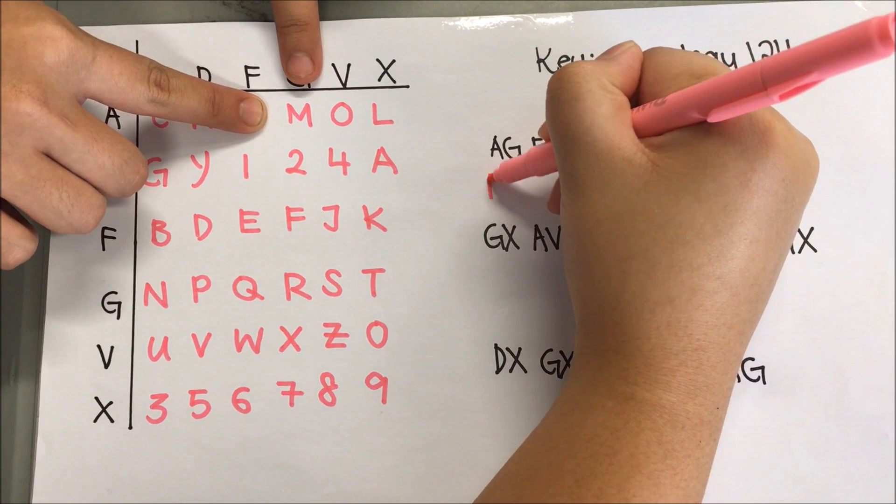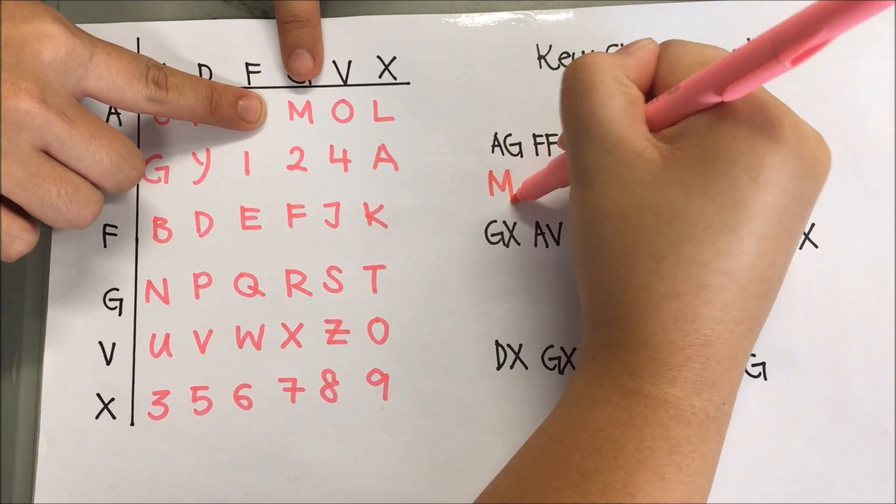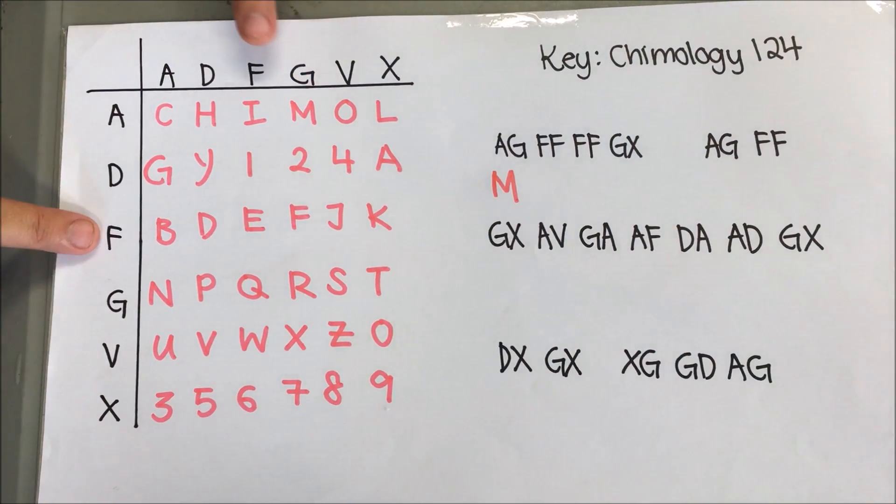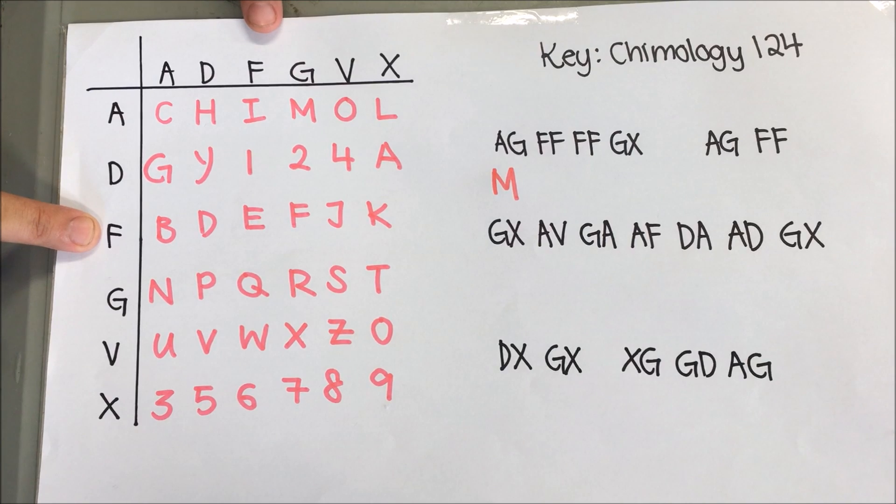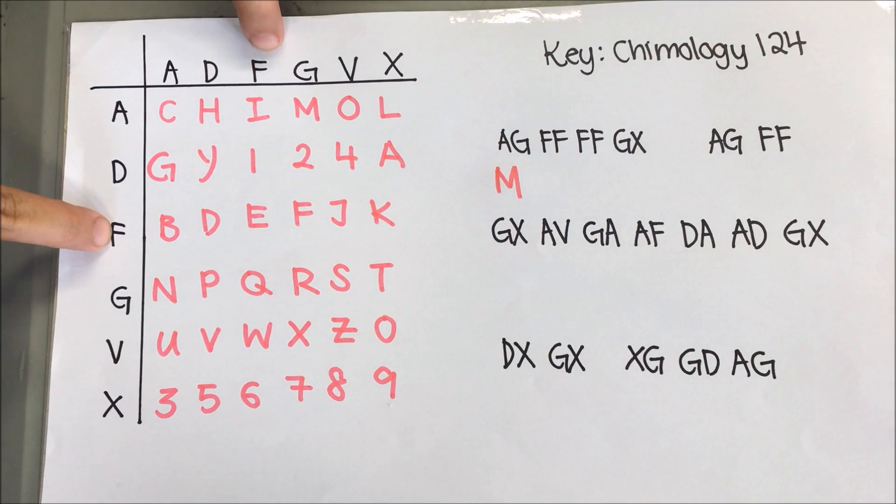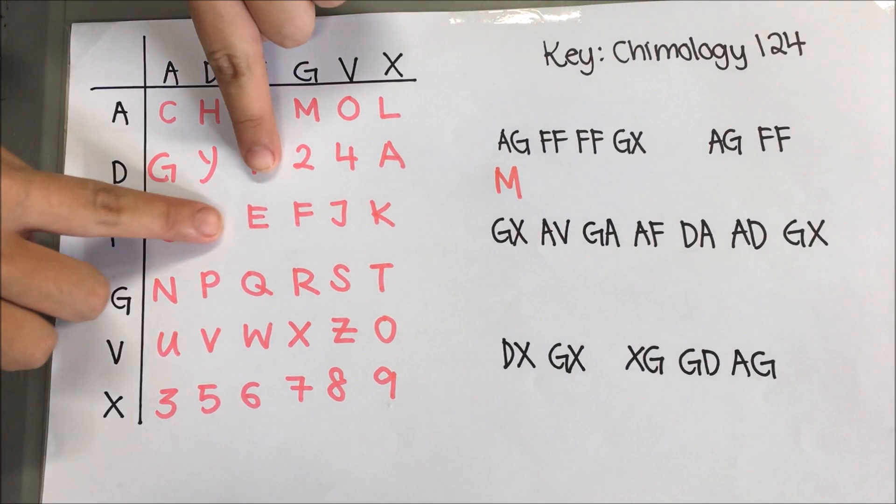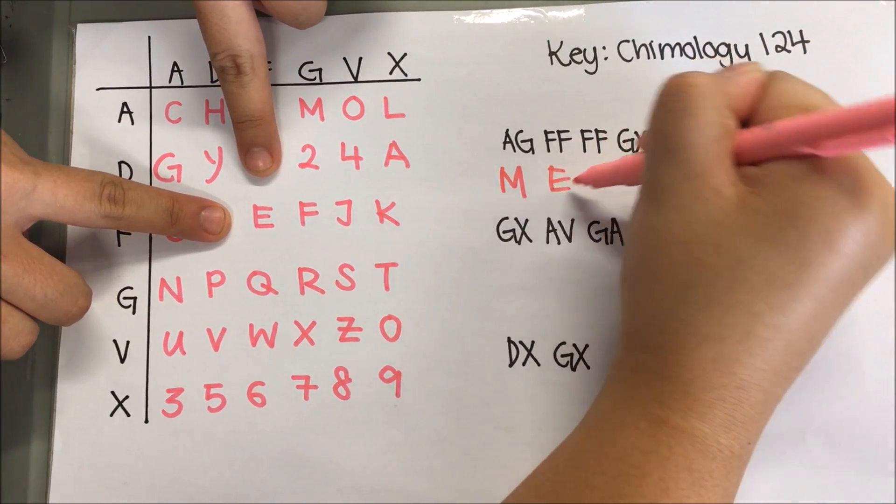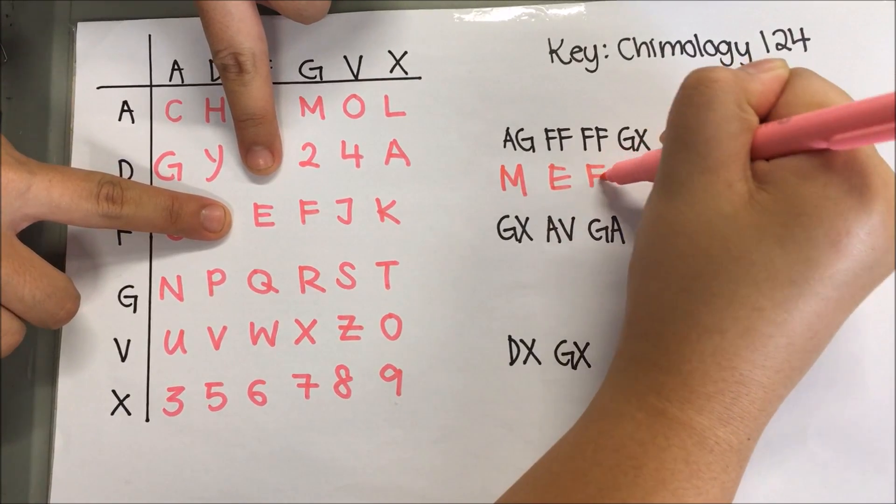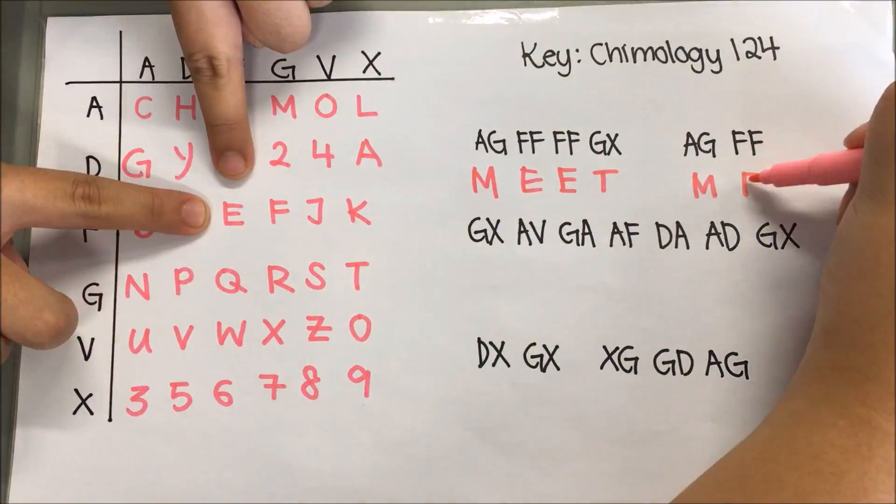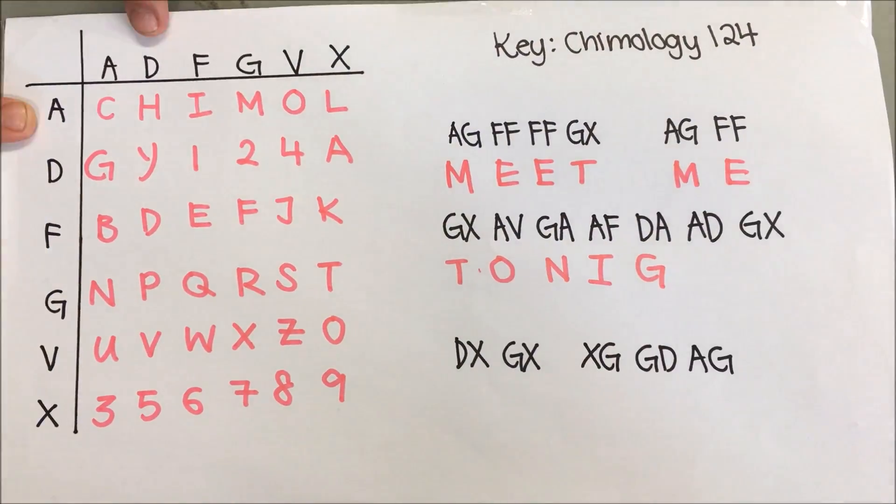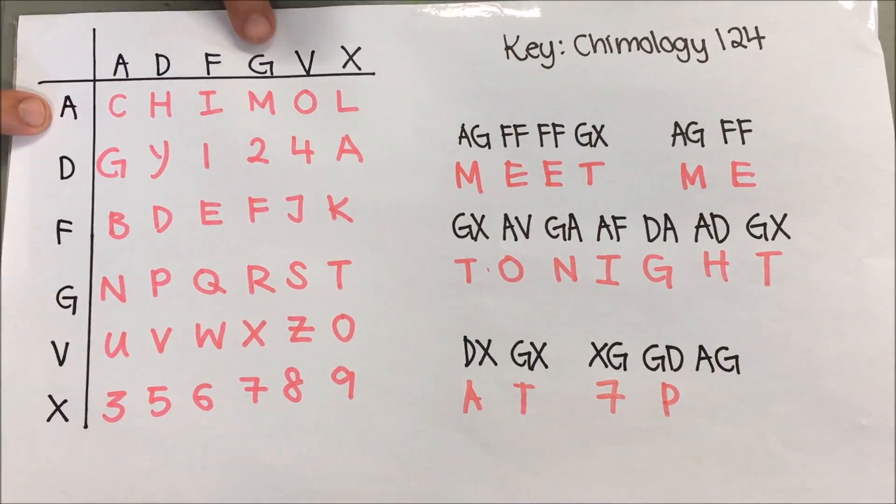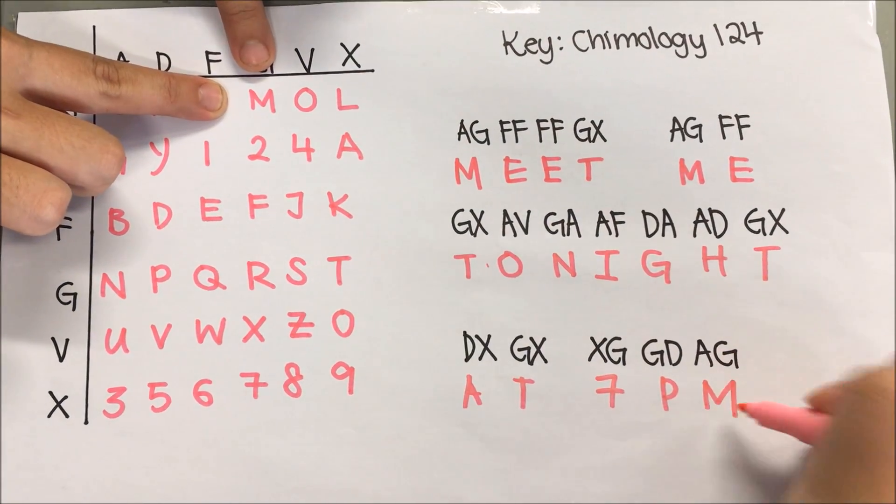Hence, the first letter of the message is letter M. Next, FF will represent row F and column F. The letter that we are supposed to find is then the letter E. Since the next encrypted letter is also FF, the next letter is also E. Using this method, continue to decrypt the rest of the message. The completed decrypted message will be Meet me tonight at 7pm.